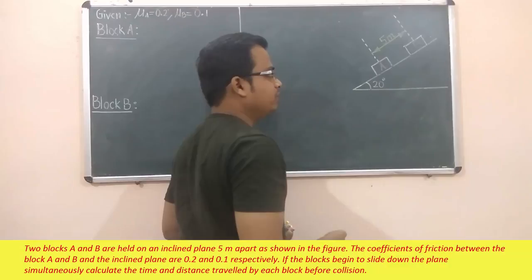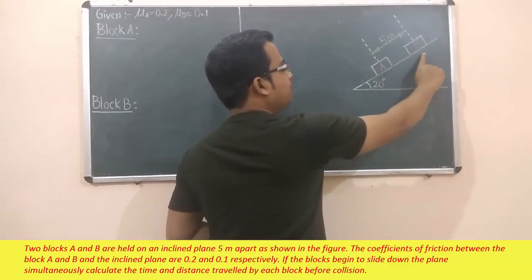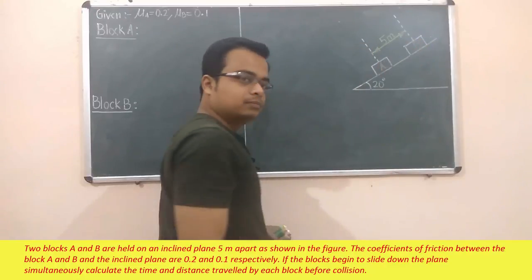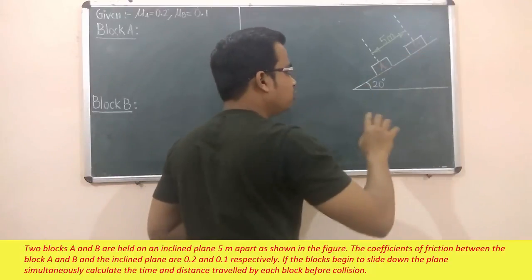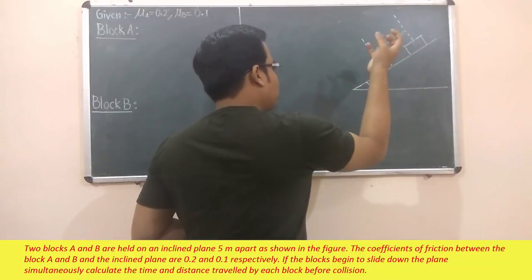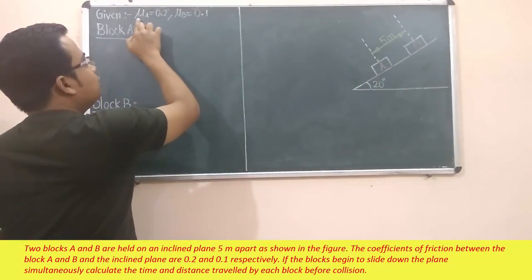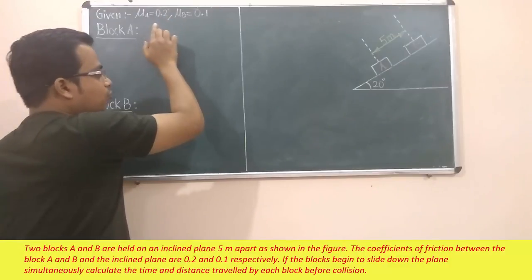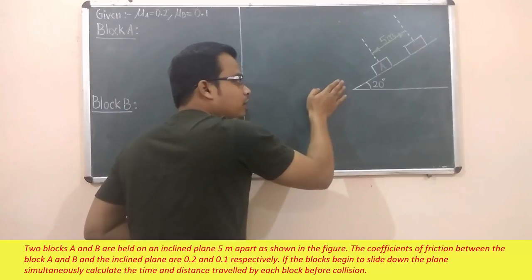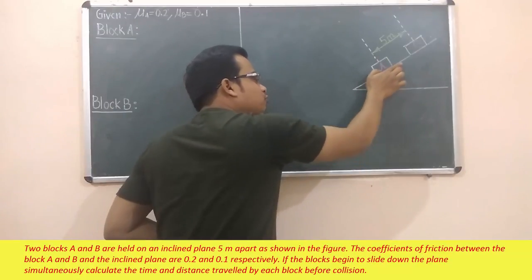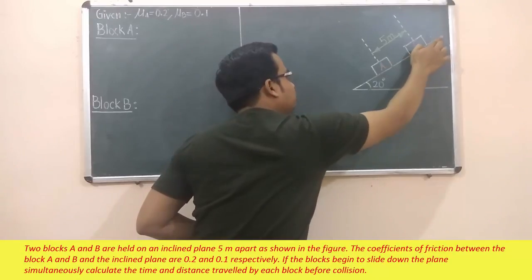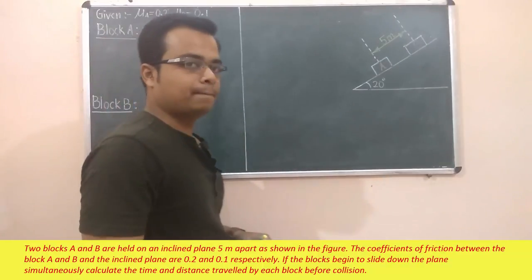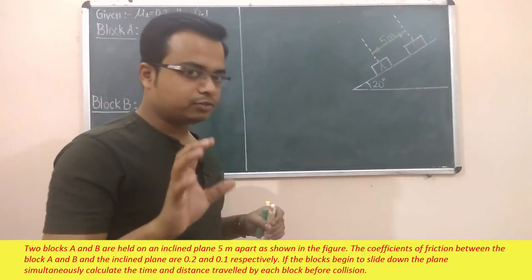Assuming that you've read the question, here we go. There's an inclined plane — angle is 20 degrees — and you can see two blocks named A and B, both of them on this incline, initially separated by a distance of 5 meters. These two blocks are going to experience some friction. Block A has a coefficient of friction of 0.2, so there's going to be a frictional force opposite to the motion. For block B, the frictional force will be along the opposite direction as well.